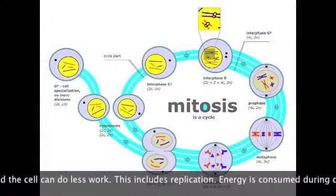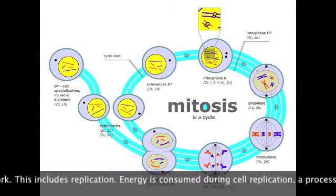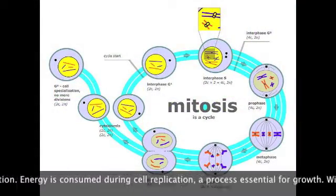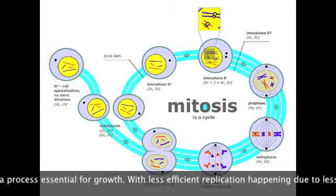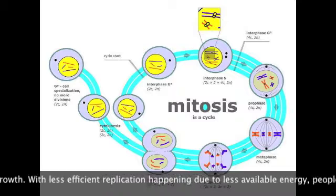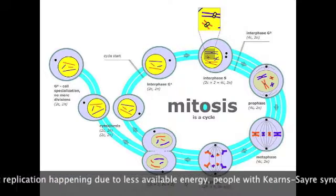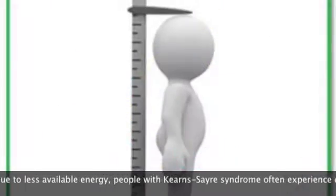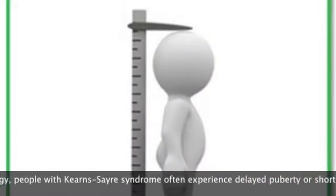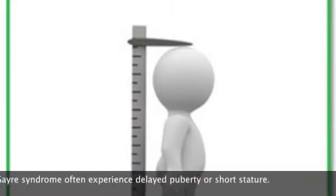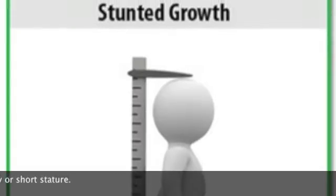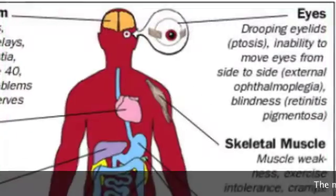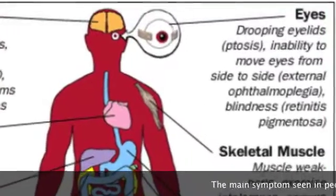This includes replication. Energy is consumed during cell replication, a process essential for growth. With less efficient replication happening due to less available energy, people with Kearns-Sayre syndrome often experience delayed puberty or short stature.